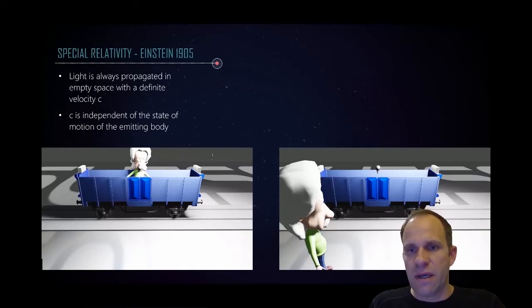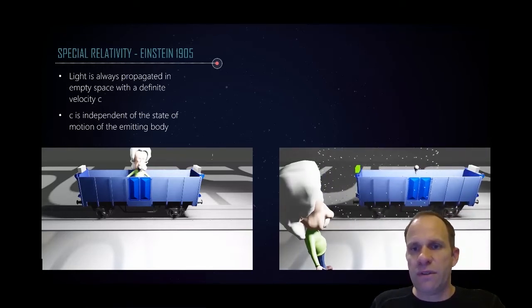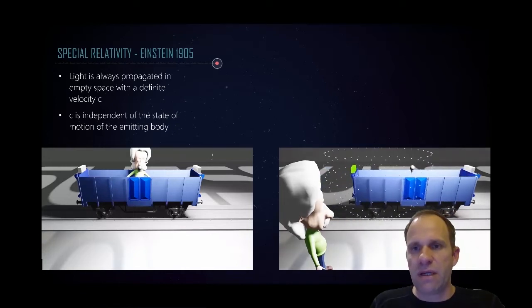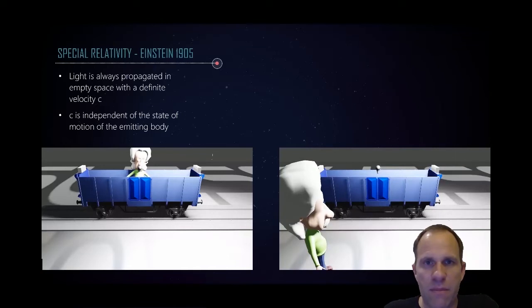Because if Albert Einstein is now located at the train station and he again looks at the emission of a light burst in the center of a wagon, he will see the following. The light will first hit the back of the train car and then the front of the train. And this has amazing consequences.